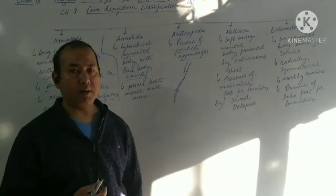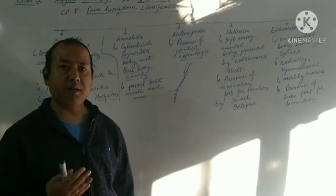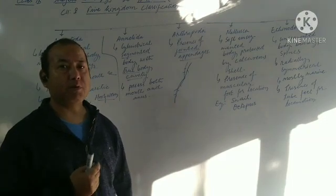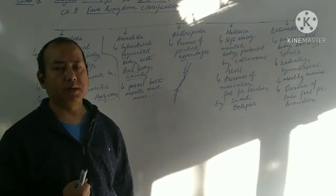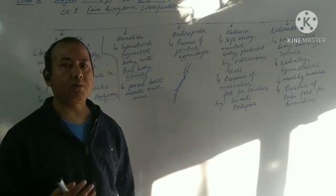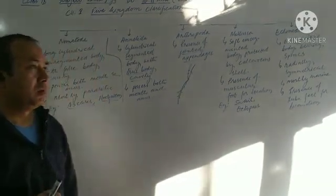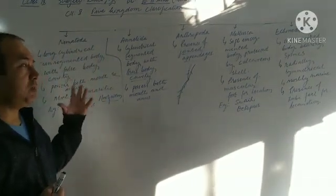So first comes Nematoda, above the Platyhelminthes we learned that they are the flatworms. Now these Nematoda are actually the roundworms, also called Aschelminthes, roundworms, all the roundworms are categorized under this group. Now, what are the characteristics of this Nematoda, the first one is,